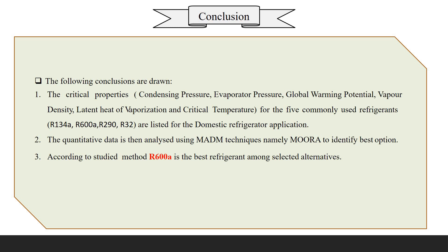Four refrigerants — R134A, R600A, R290, and R32 — were evaluated for domestic refrigerator applications. Quantitative data was analyzed using the MOORA technique to identify the best option for refrigerant selection.